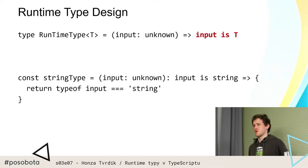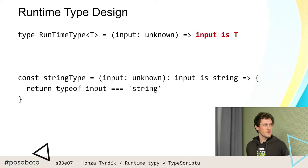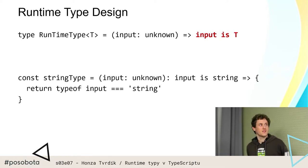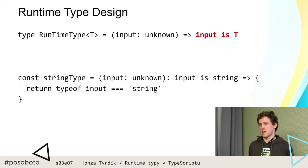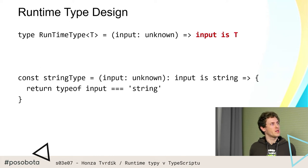Například kdybychom chtěli mít validátor pro string, tak on prostě vrátí TypeScriptovou definici 'input is string' a vrátí, pokud typeof je string. Tohle funguje pro nějaké základní cases, ale problém obecně je prostě, že vrátíte boolean, dáte si to do podmínky, ono to TypeScript klasně v rámci té podmínky zvládne, nicméně nemáte žádné místo, kam dáte nějaké chybové hlášky, detailněji o tom, proč to neprošlo.